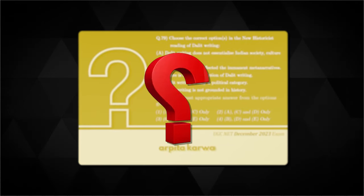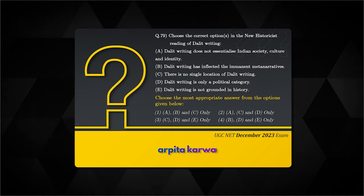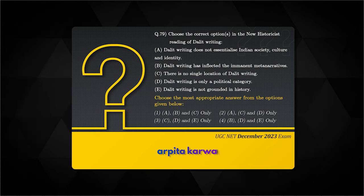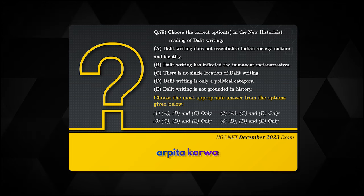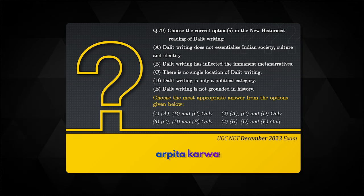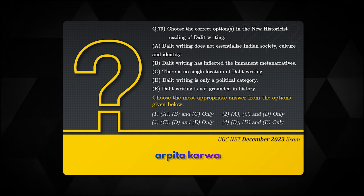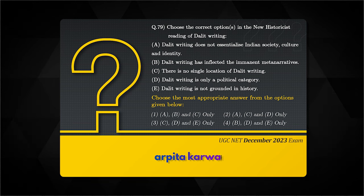Now it's time to discuss a question from Dalit literature asked in the very recent December 2023 exam. You have to choose the correct options in the neo-historicist reading of Dalit writing, from statements A, B, C, D and E, then select the correct combination from options 1, 2, 3 or 4. The term 'neo-historicist reading of Dalit literature' might sound difficult and make you nervous, but reading the options carefully, the question may turn out to be very easy if you are aware of the ideology of Dalit literature.